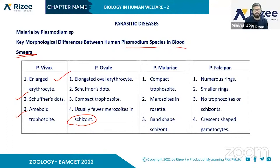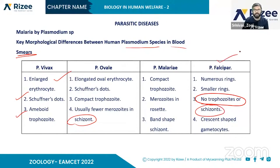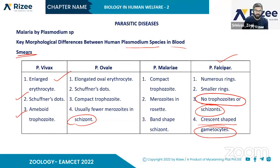In Plasmodium falciparum, numerous rings and smaller rings are presented. An important character is that no trophozoites are seen in peripheral blood. Crescent-shaped gametocytes are presented — this is a main distinguishing feature in the blood smear.